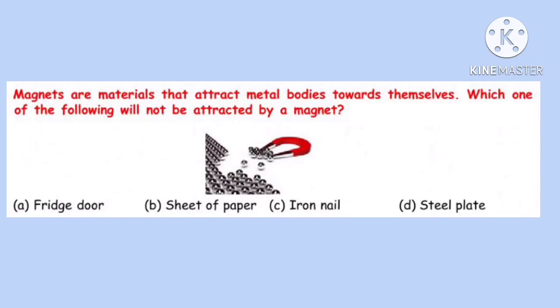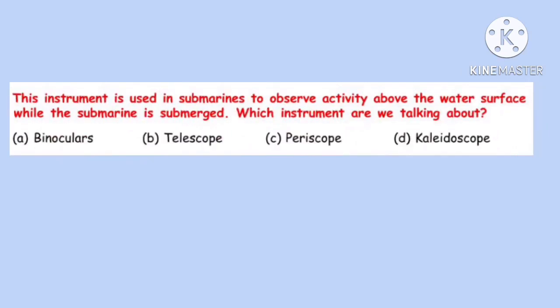Question 28. Magnets are materials that attract metal bodies towards themselves. Which one of the following will not be attracted by a magnet? Correct option is B: Sheet of paper.